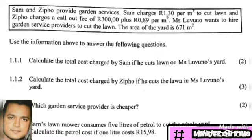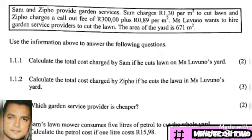The key difference to note is that Zippo has a call-out fee of R300. That means after calculating his payment per square meter, we need to add an extra R300 to his amount. Now that we have an understanding of the information given to us, we can look at the respective questions.